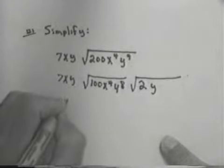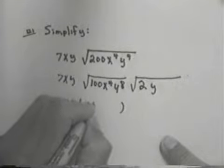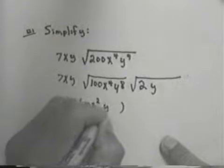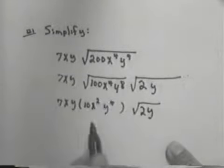So I have 7xy times 10x squared, y to the 4th, times the square root of 2y.